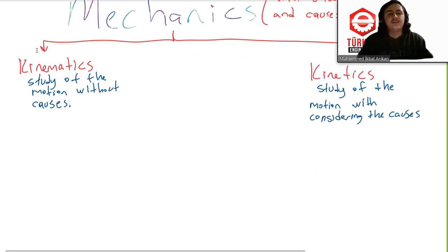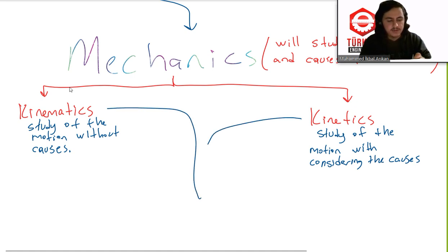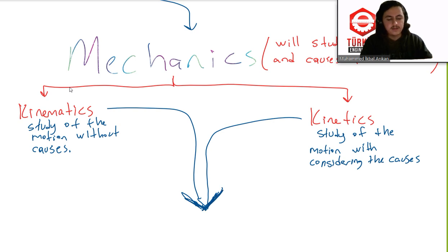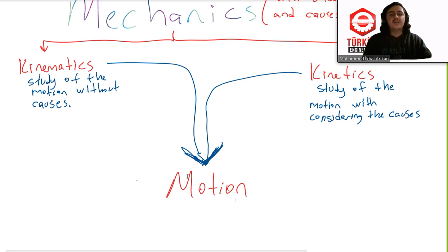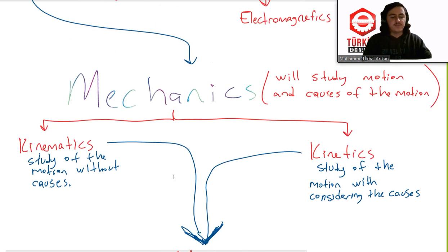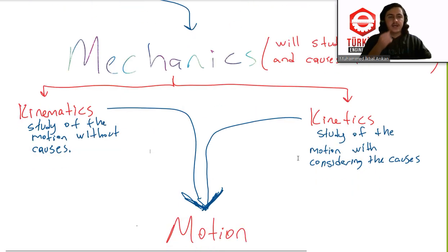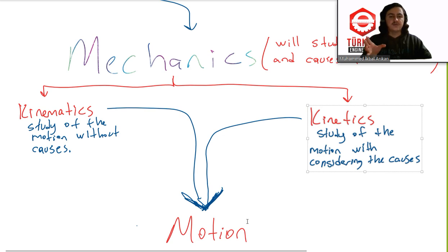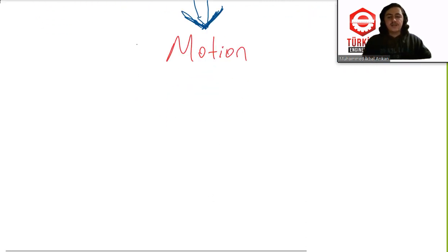Both kinematics and kinetics are actually studying the same thing — motion. They are going toward the same idea: the study of motion. The mechanics is kinematics and kinetics, and it is the study of motion. In kinematics we study motion without causes, and in kinetics we are interested in the causes.